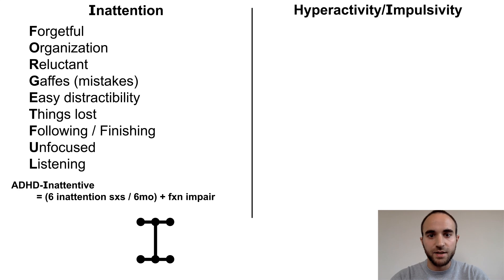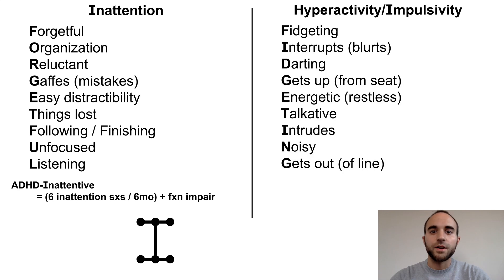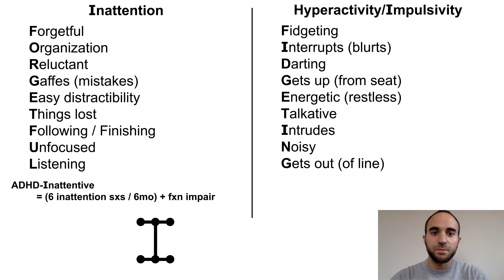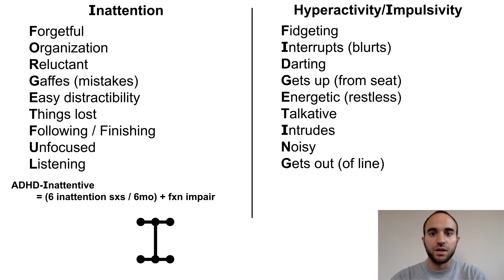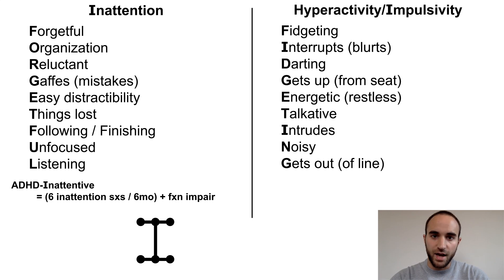Next, let's outline the hyperactivity-impulsivity symptoms. There are nine hyperactivity-impulsivity symptoms which you can remember with the mnemonic FIDGETING: fidgeting, interrupting people or blurting out answers, darting around (which refers to running and climbing inappropriately), getting up from their seat inappropriately, being overly energetic or restless, being overly talkative, intruding on others, being inappropriately noisy, and getting out of line (which refers to not waiting or taking turns well).